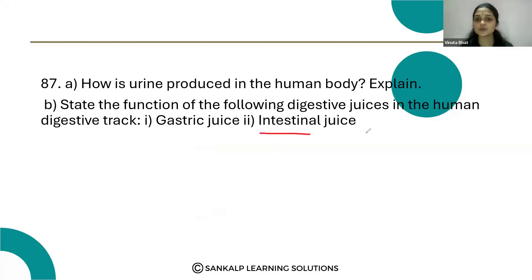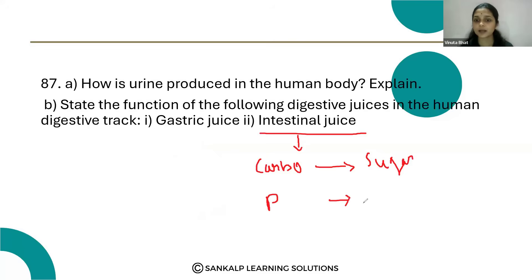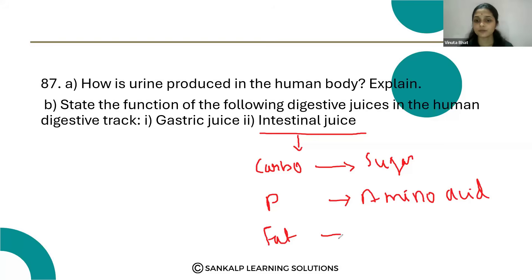And the intestinal juice. Intestinal juice converts carbohydrates into simple sugars, and protein into amino acids. It also converts fat into fatty acids and glycerol.